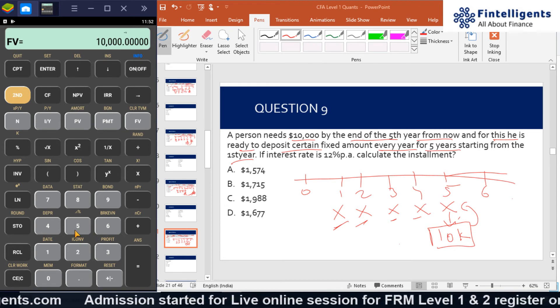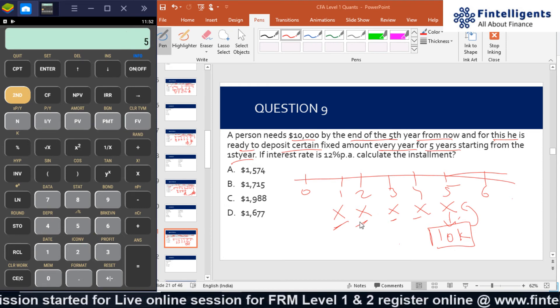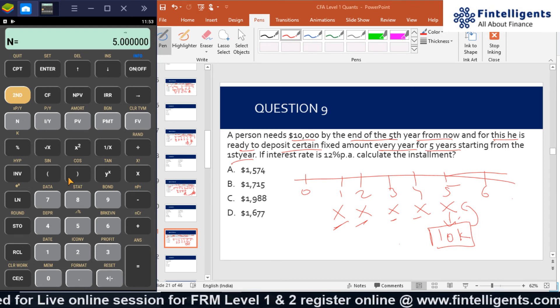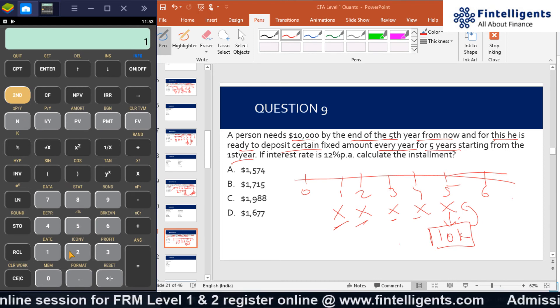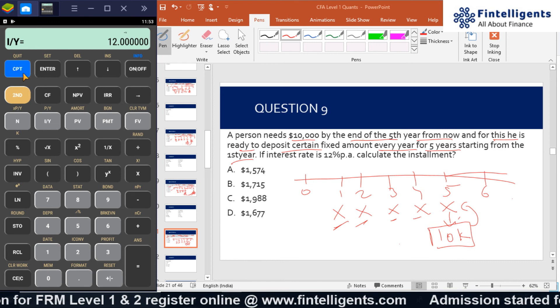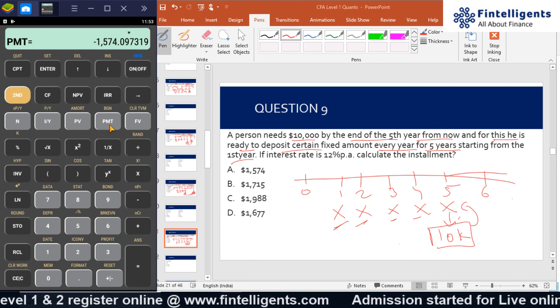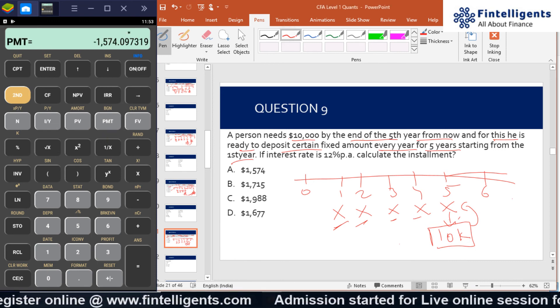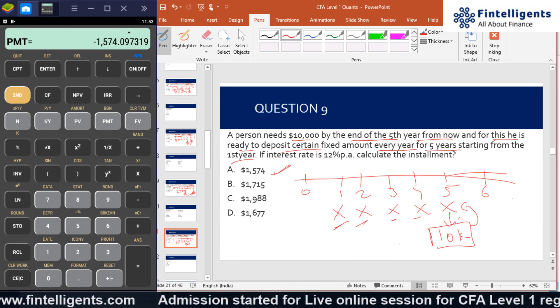And I'll input 5 as N because there are five PMTs that I'll be receiving, and interest rate is 12%, so I'll input 12 as I/Y. I'll go and compute for my PMT. So the answer for this question is 1574, that is option A.